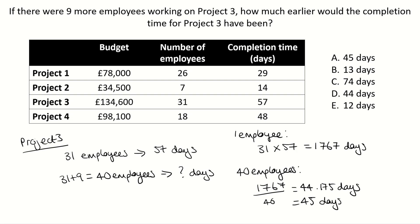The question asks how much earlier would the completion time for Project 3 have been — so how many days have we saved? If it was originally taking 57 days and instead with nine more employees it will take 45 days, the difference is going to be 12 days. So our answer is E.